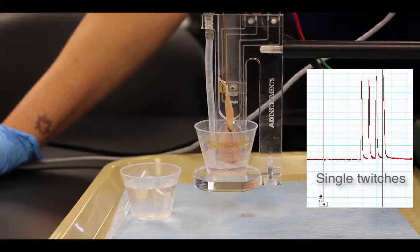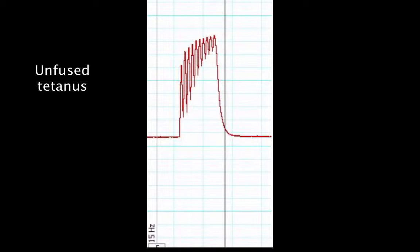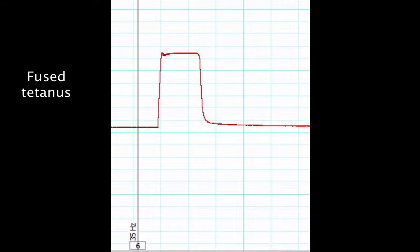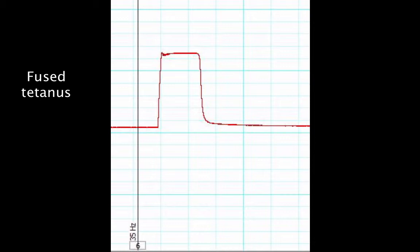To measure temporal summation, we start with low frequency stimulation to generate single twitches which relax completely in between stimuli, and then increase the frequency to demonstrate unfused tetanus where there's relaxation between twitches, and fused tetanus where the muscle stays contracted and there's no loss of tension between twitches. And finally, at high frequency 60 hertz, we see fused tetanus and then fatigue as the muscle keeps losing tension despite repeated stimulation.